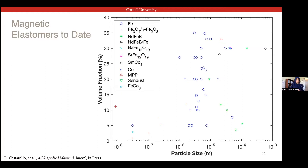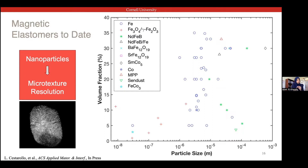Most magnetorheological elastomers developed so far use microparticles of tens of microns or larger, even hundreds of microns in size. Those particles, if you try to put them into a film and bend it, can't actually bend on the scale of the particle dimensions. So you only get resolution of texture larger than the particle dimension. If we want to move to micro-texture — for example, replicating the ridges of fingerprints on skin — then we need nanoparticles. Nanoparticle magnetorheological elastomers have not yet been significantly explored, and we're trying to contribute to this research.